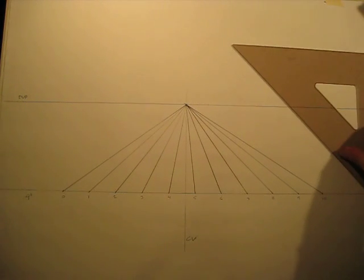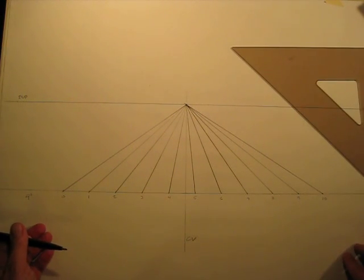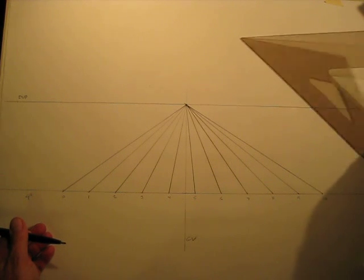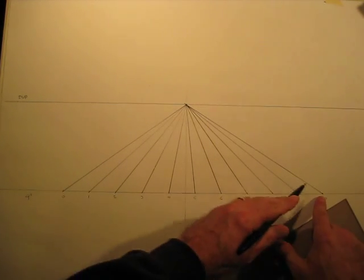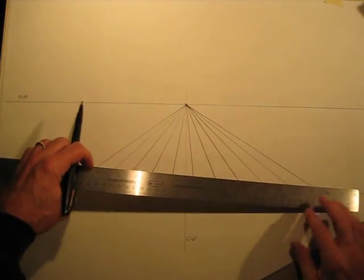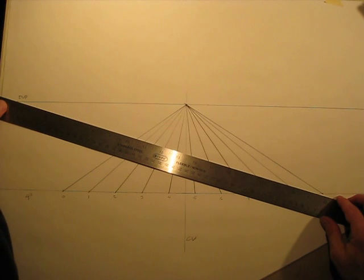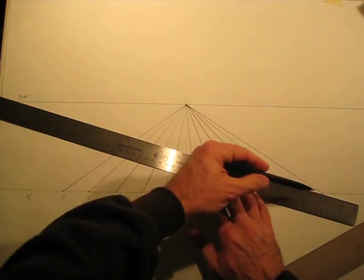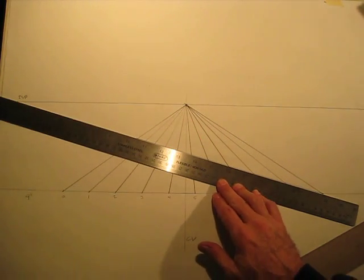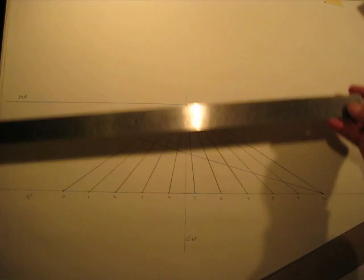So all our measurements are set out for you, so we're going to use now the diagonal vanishing point in order to find intersections along the orthogonals so that we can measure the horizontal lines for the squares going back into space. So starting at the lower right-hand corner, I'm going to draw a line to the diagonal vanishing point. And I'm going to start at the corner of the grid, and I only need to go to the end of the grid, because that's where my grid is going to end anyway.